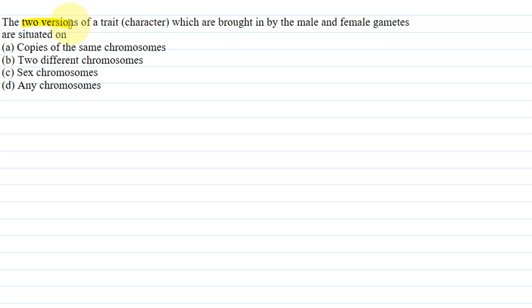The question says that the two versions of a trait (character) which are brought in by the male and female gametes are situated on: option A, copies of the same chromosome; option B, two different chromosomes; option C, sex chromosome; option D, any chromosome.